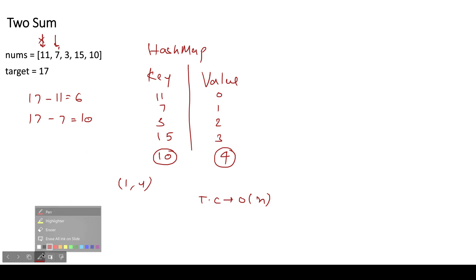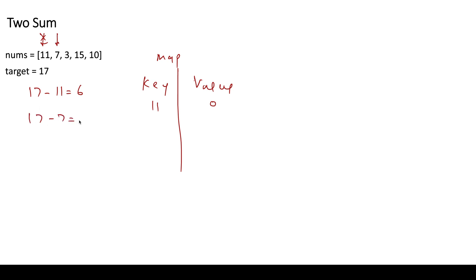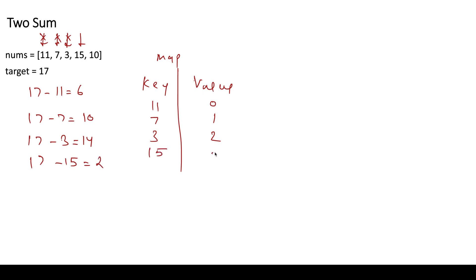Initially our map is empty. When we pick 11, we check 17 minus 11 equals 6 — we don't have 6, so we store 11 at index 0. Next, for 7, we need 10 — we don't have 10, so we store 7 at index 1. For 3, we need 14 — not present, so store 3 at index 2. For 15, we need 2 — not present, store 15 at index 3. Finally for 10, we check 17 minus 10 equals 7 — we have 7 in the map, so we return the indices.